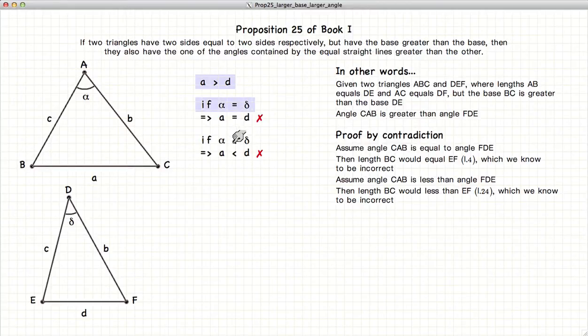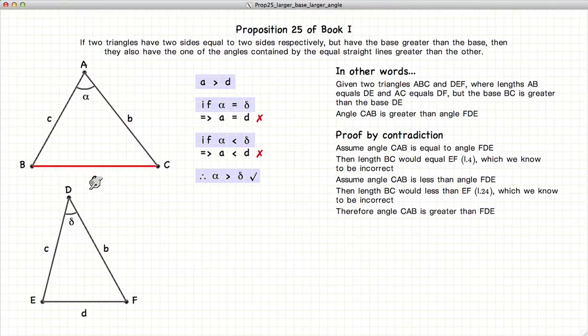So we have two conditions that produce inconsistencies and cannot be true. If alpha cannot equal delta and alpha cannot be less than delta, the only thing left is that alpha is greater than delta. And thus we have demonstrated that if the base is larger in one triangle, then the angle is also larger.